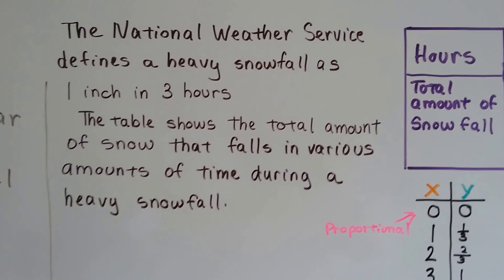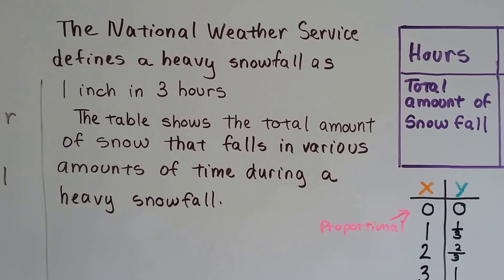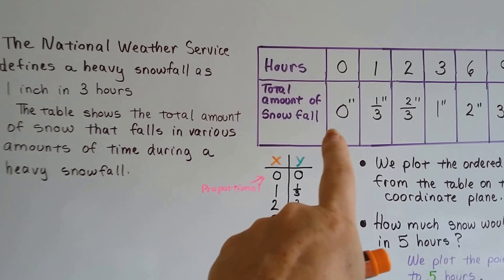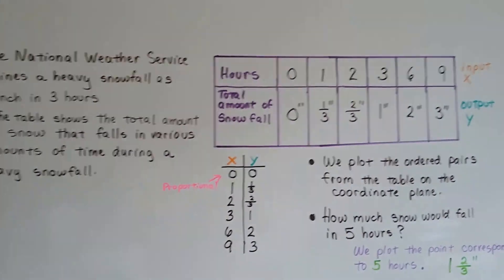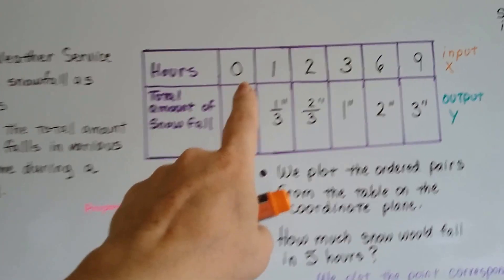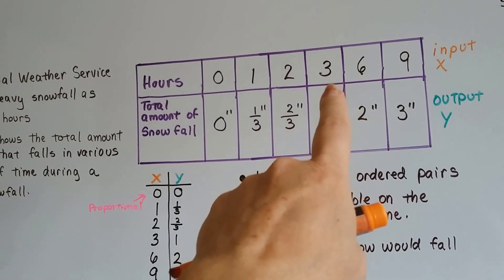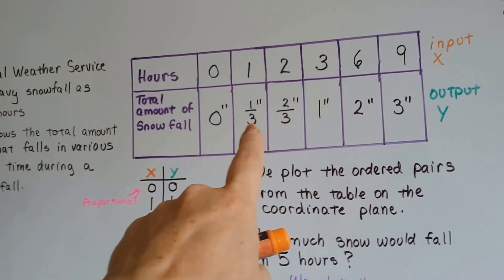The National Weather Service defines a heavy snowfall as 1 inch in 3 hours. And this table shows the total amount of snow that falls in various amounts of time during a heavy snowfall. So, 0 hours would be 0 inches of snow. Here's the 1 inch in 3 hours, so that means 1 hour is 1 third of an inch.